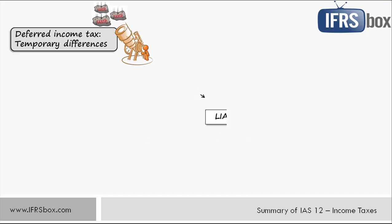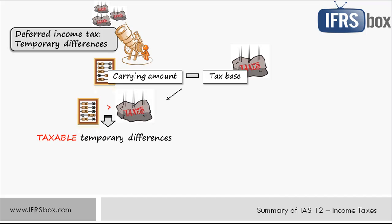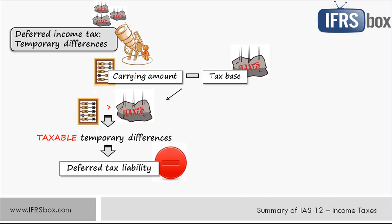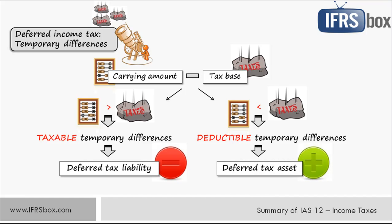Once you understand the concept of tax base, we can compute temporary differences. Temporary difference is simply the carrying amount of an asset or liability less its tax base. When the carrying amount exceeds the tax base, it is a taxable temporary difference and gives rise to a deferred tax liability. On the other hand, when the carrying amount is lower than the tax base, it is a deductible temporary difference and gives rise to a deferred tax asset. Additionally, when an entity has unused tax losses or tax credits that could be carried forward, a deferred tax asset may be recognized to the extent that it is probable that future taxable profit will be available against which they can be utilized.